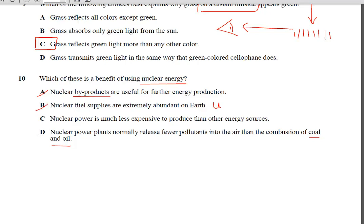Letter C. Nuclear power is much less expensive to produce than other energy sources. Well, that's a no, too, because the cost of making a nuclear power plant is pretty pricey. Because you have to keep the reactor cool. And it's a very technical process. It's dangerous. And you really have to make sure that it's safe. So nuclear power plants are pretty pricey to make.